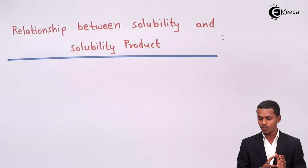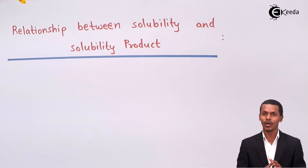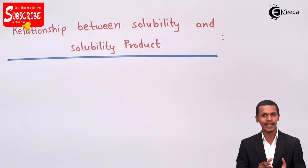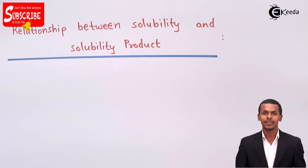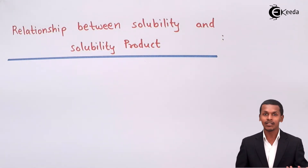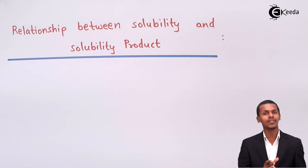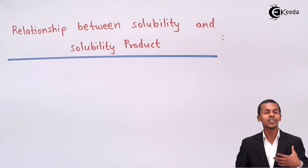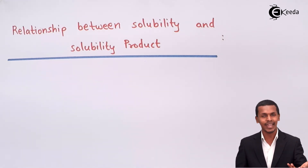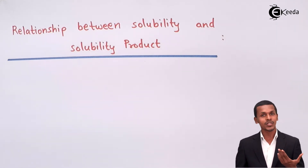To give the relation between the solubility product and the solubility, we first need to understand that most salts are not easily dissociated when dissolved in water. Therefore we call them sparingly soluble salts. Sparingly soluble salts don't dissociate completely into their respective cations or anions, and that is what the solubility product emerges from.